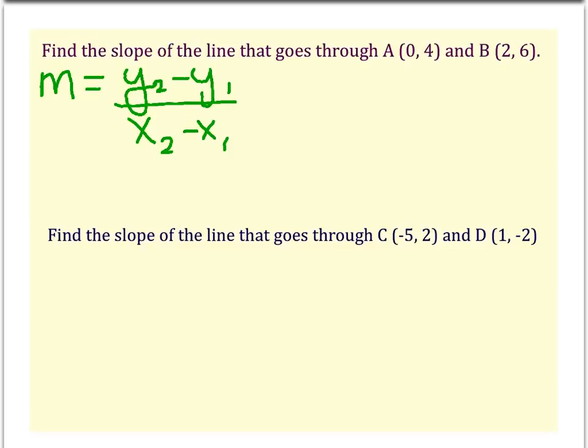So in this problem, we're going to label our A and B points. A can be our x1, y1, and B can be our x2, y2. Remember that it doesn't matter how you label them. Point B could have been x1, y1, and A could have been x2, y2, but once you label them, it's important that you stay consistent and stick with it.